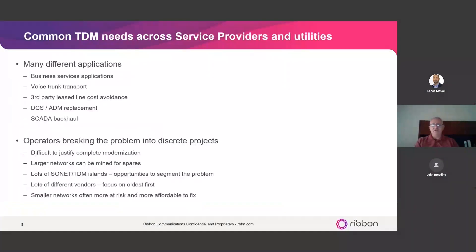The direction is migrating to the new generation, and there are different types of migration and applications we come across — from service providers, end users, and utility perspectives. We still see many applications using TDM: simple business applications over old traffic interfaces like OC3 or OC12, voice trunking for DS1s and below, third-party leased lines due to TDM security, and digital cross-connect and ADM replacements that are still running.